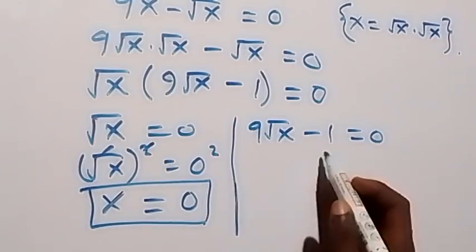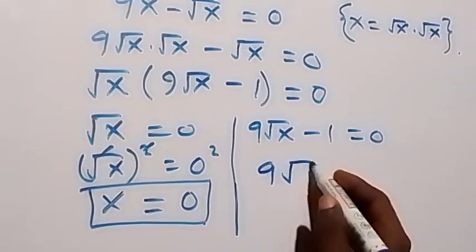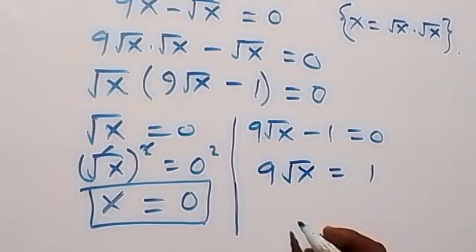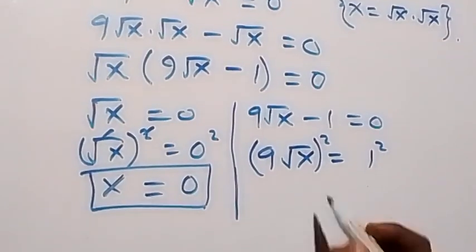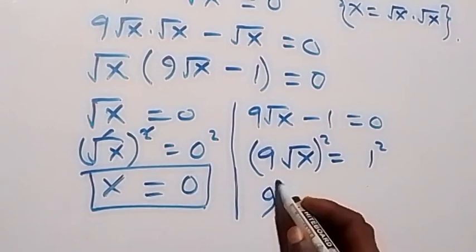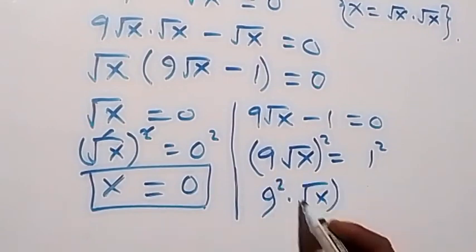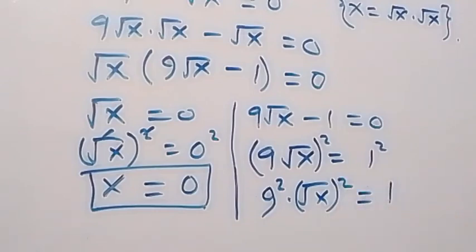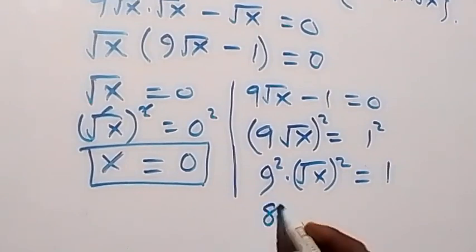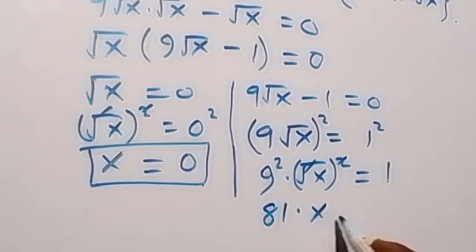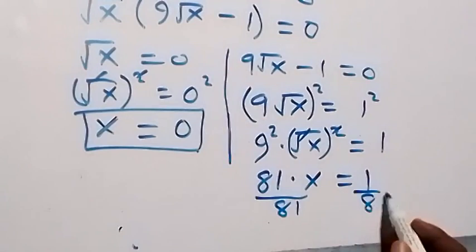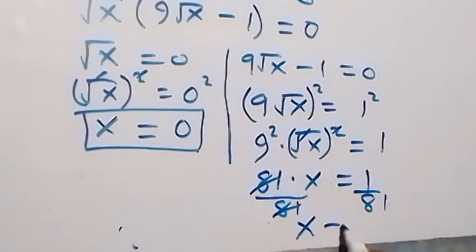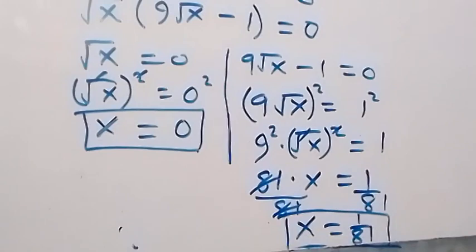From the other factor, we take 1 to this side: 9 root x equals to 1. We square both sides; squaring the left side affects both 9 and root x, giving 9 squared times root x squared, equals 1 squared. So 81 times x equals 1. To get x, we divide both sides by 81, and we have x equals to 1 over 81. This gives us the second value of x, which is 1 over 81.